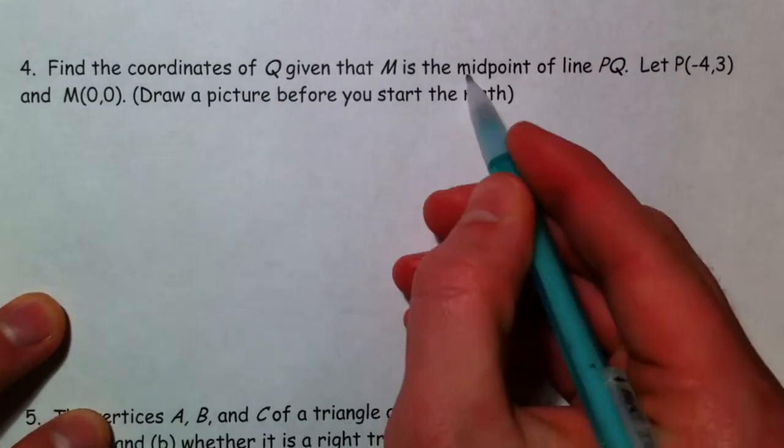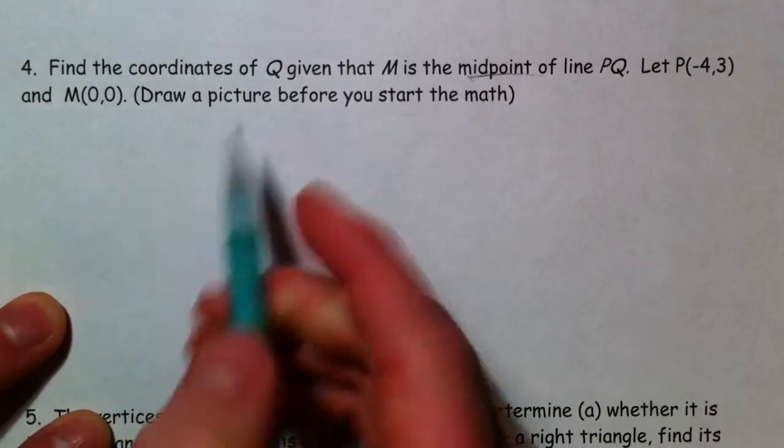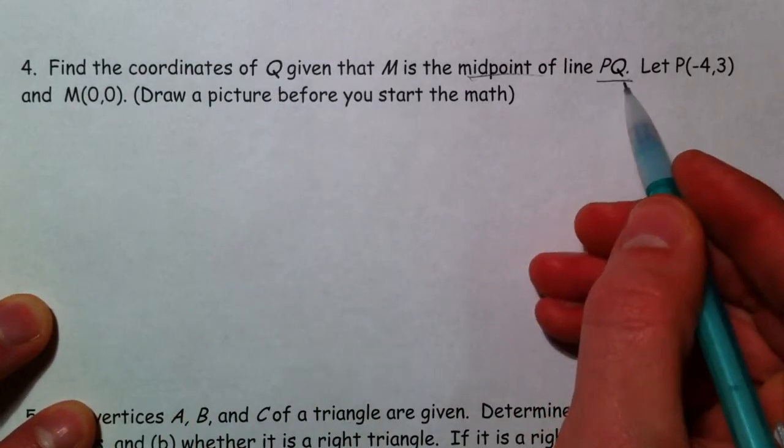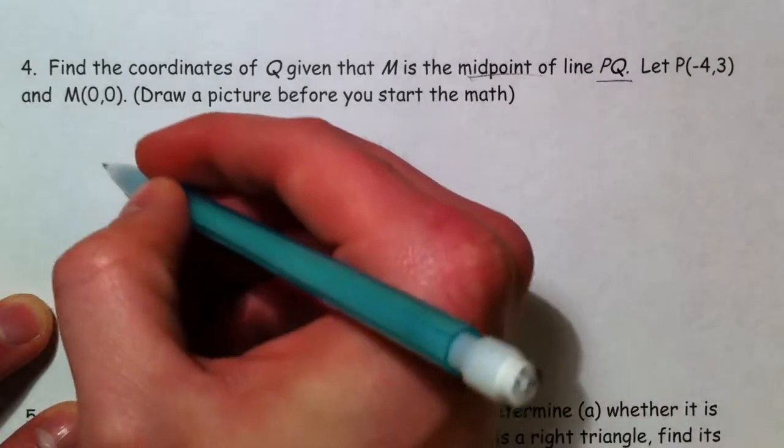This is another common midpoint question where they sort of do it in backwards. Some line PQ, and you know P is negative 4, 3.